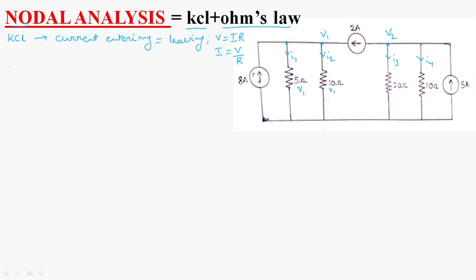Now, what I am doing is, I am applying the nodal analysis at node V1. At node V1, what are the currents entering? See, this is the current entering and this is the current entering. These two are the currents entering. So, algebraic sum of the currents entering.